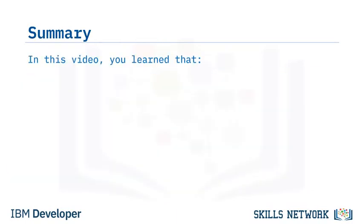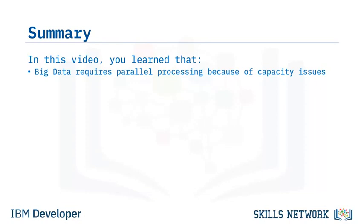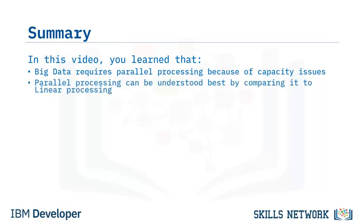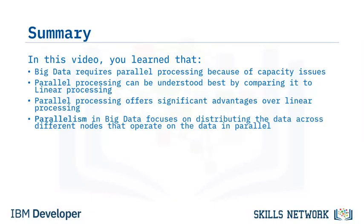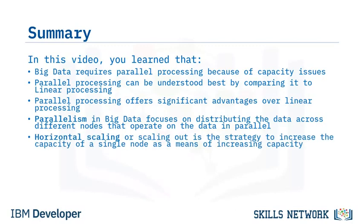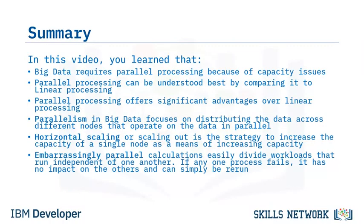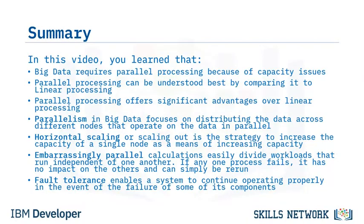In this video, you learned that Big Data requires parallel processing on account of massive volumes of data that are too large to fit on any one computer. Linear processing is sequential, while parallel processing works on multiple instructions at the same time. Parallel processing has significant advantages over linear processing and is best suited for processing Big Data. Parallelism in Big Data focuses on distributing the data across different nodes operating on the data in parallel. Horizontal scaling, or scaling out, is a strategy to add additional nodes to increase capacity. Embarrassingly parallel calculations are workloads that can easily be divided and run independently — if any one process fails, it has no impact on the others. Fault tolerance is the property that enables a system to continue operating properly in the event of the failure of some of its components.